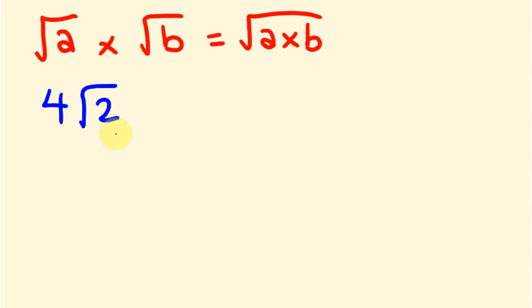And the way that you multiply these is much the same. You just deal with these numbers here first, so 4 times 3, 4 times 3 is 12.